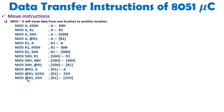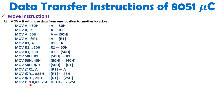When you execute MOV DPTR, #2525H, the 16-bit register DPTR is loaded with the value 2525H. DPTR is a 16-bit register used for pointing to external RAM. So here you are loading DPTR with the address 2525H, which points to a location in external RAM.